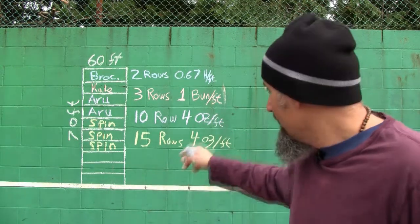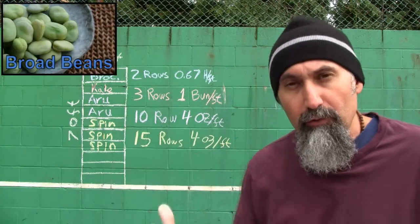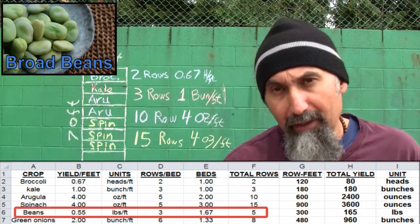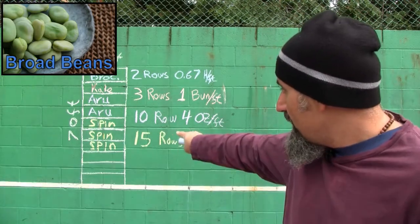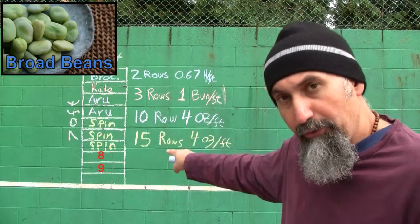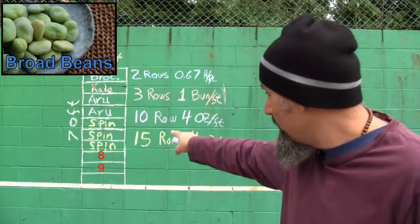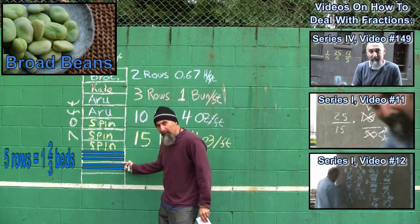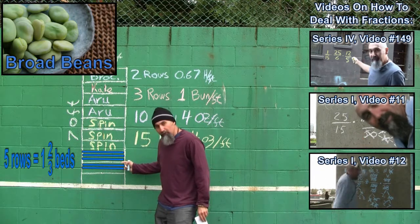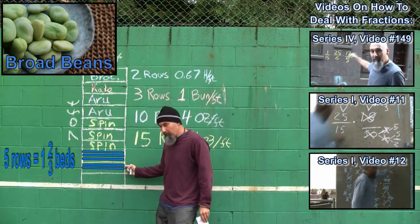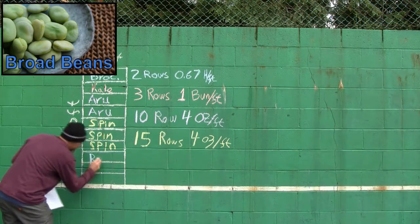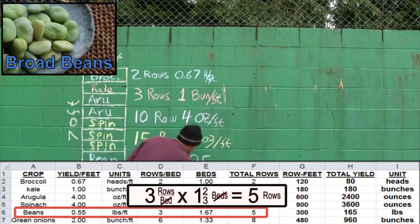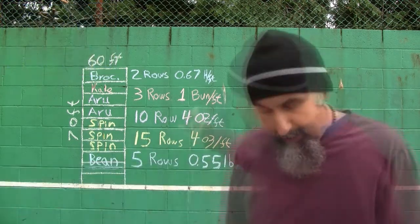For the next beds we're going to mix it up a bit — we want to grow beans and we want five rows of them. The spec for beans is only three rows per bed, so we're going to use bed eight and two-thirds of bed nine: three rows in bed eight and two rows in bed nine. That takes up two-thirds of bed nine because two out of three rows is two-thirds. The yield spec for beans is 0.55 pounds per foot.